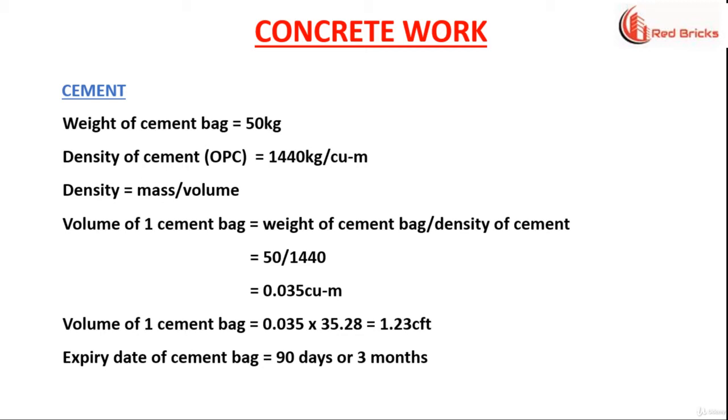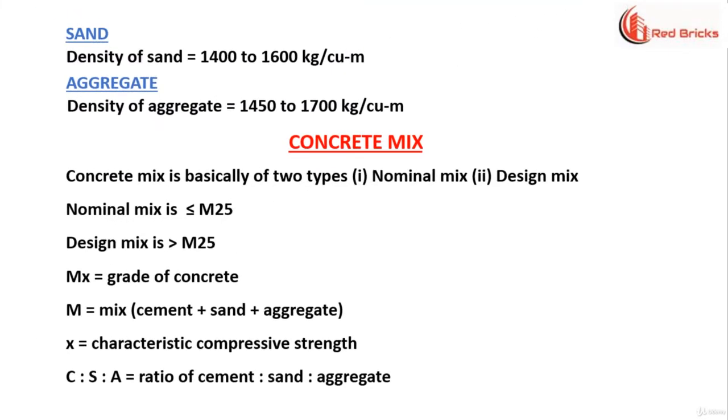Expiry date of cement bag is usually 90 days or 3 months from the date of manufacture. The standard density of sand ranges from 1400 to 1600 kg per cubic meter. The density of aggregate is from 1450 to 1700 kg per cubic meter.